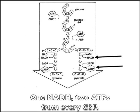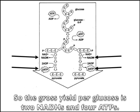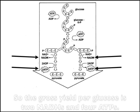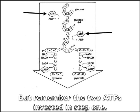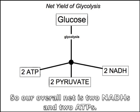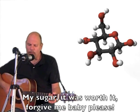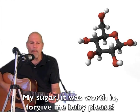1 NADH and 2 ATPs from every G3P — so the gross yield from glucose is 2 NADH and 4 ATPs. But remember the 2 ATPs invested in step 1, so the net yield is 2 ATPs you can use to jump and run. So our overall net is 2 NADH and 2 ATPs. My sugar, it was worth it — forgive me, baby, please.